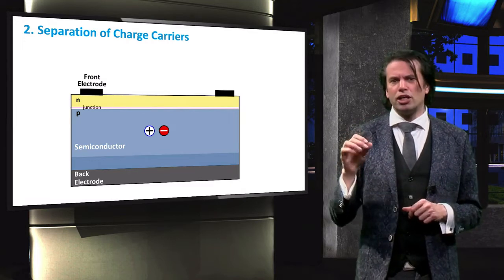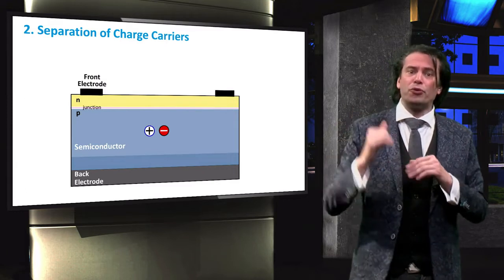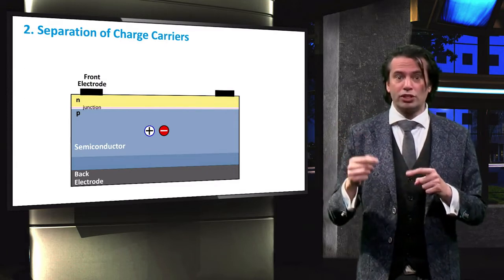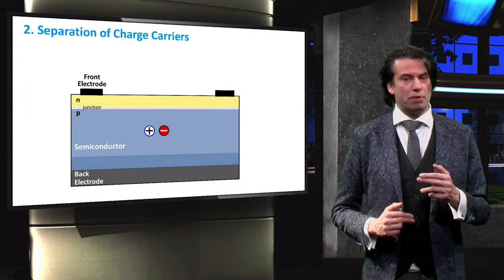This ensures that the electrons can only flow out through one membrane and holes can only flow out through the other membrane.